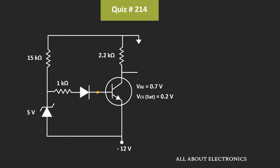These terminals are the base, collector, and emitter terminals. For a moment, let's assume that this Zener diode is operating in the breakdown region. That means the voltage drop across this Zener diode is equal to 5V.